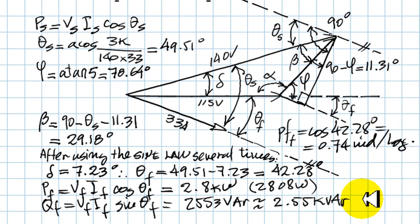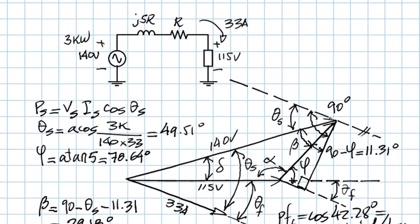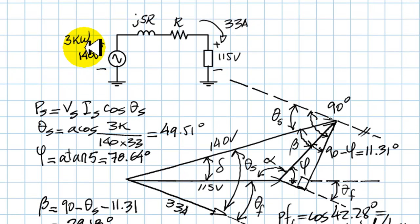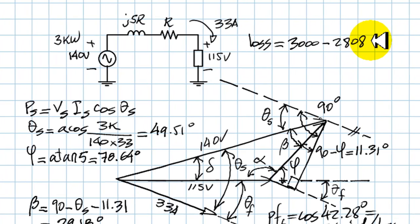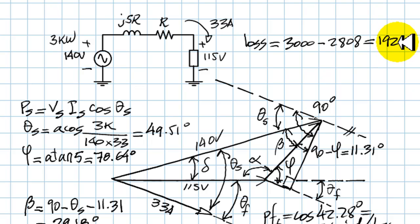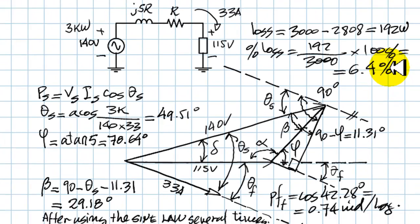And the efficiency? Let's see what the losses are. The power input by the source is 3,000 watts. But the power absorbed by the load on this side is less than that, is 2,808. So that means that the losses are 3,000 minus 2,808, and that is 192 watts. In percentage, with respect to the 3,000, that is divided by 3,000 times 100%, that is 6.4%. And that is the answer to this question.